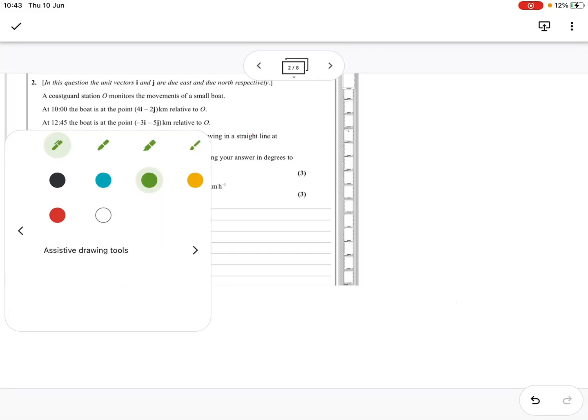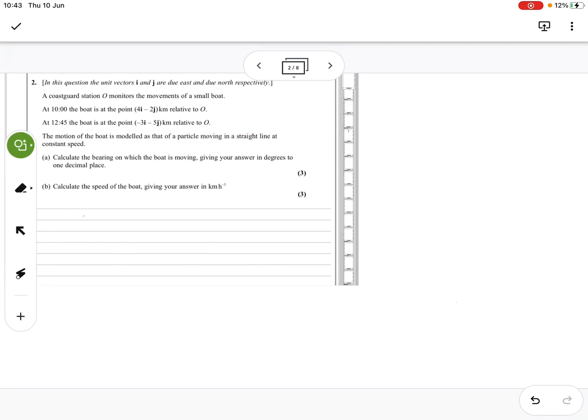Okay, so this is question two of the October 2020 paper that we did as the summer exam. We've got a Coast Guard monitors something, we've got a boat at point A and then it's at point B. The motion of the boat is modeled as a particle, calculate the bearing.